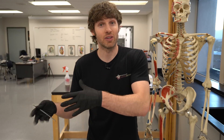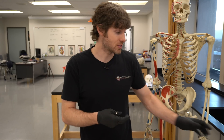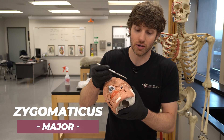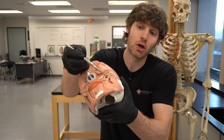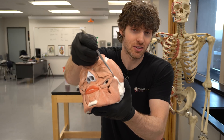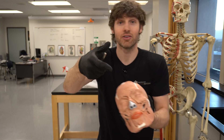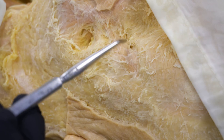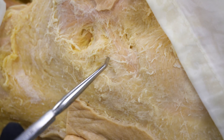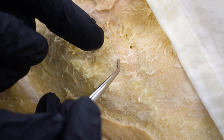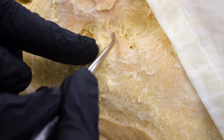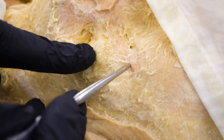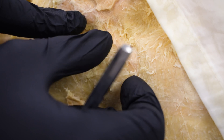Now we'll show a muscle on a cadaver — we're super grateful to the donors. This also illustrates the challenge of dissecting facial expression muscles because of their relationship with the hypodermis and dermis. The muscle is the zygomaticus major. On the model, it runs from the zygomatic bone down to the corner of the mouth. On the cadaver you can see the faint muscle coming through as surrounding adipose tissue is removed. The zygomaticus major pulls the corner of the mouth upward for smiling.